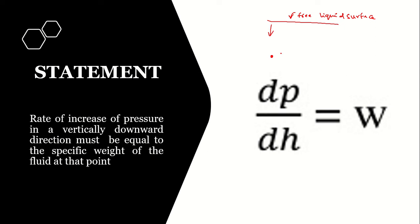The mathematical expression is: dp/dh, which stands for rate of increase of pressure in the vertically downward direction where h represents depth. This is equal to the specific weight of the fluid at that point, denoted by small w, or equivalently dp/dh = ρg. This is what we will be proving right now.